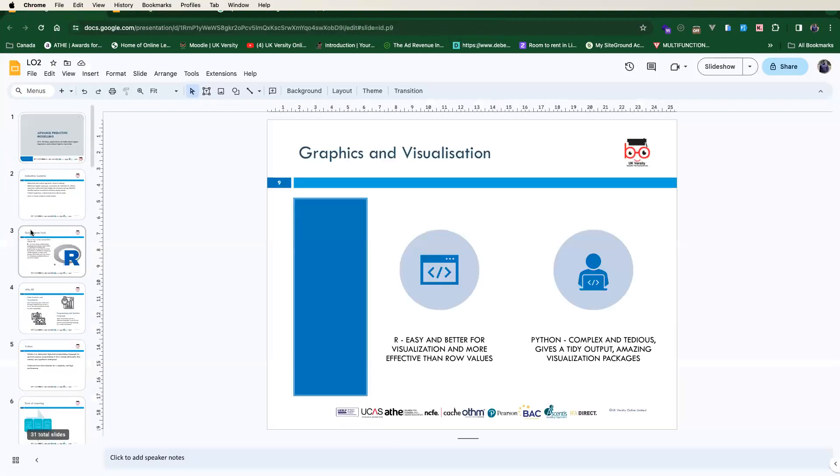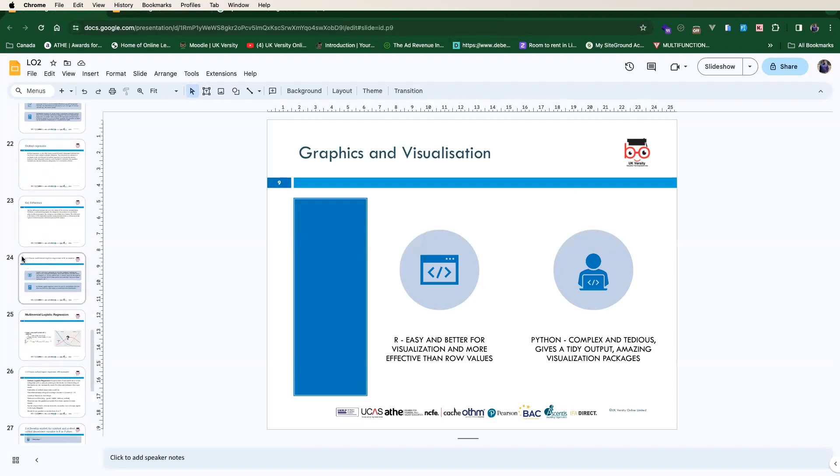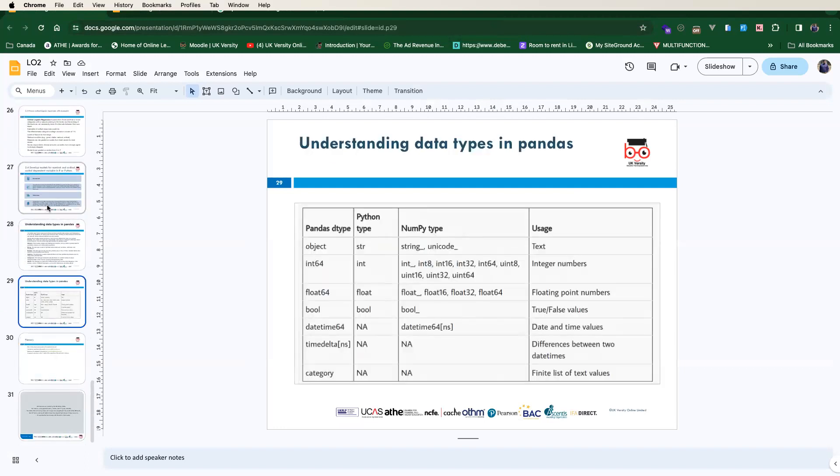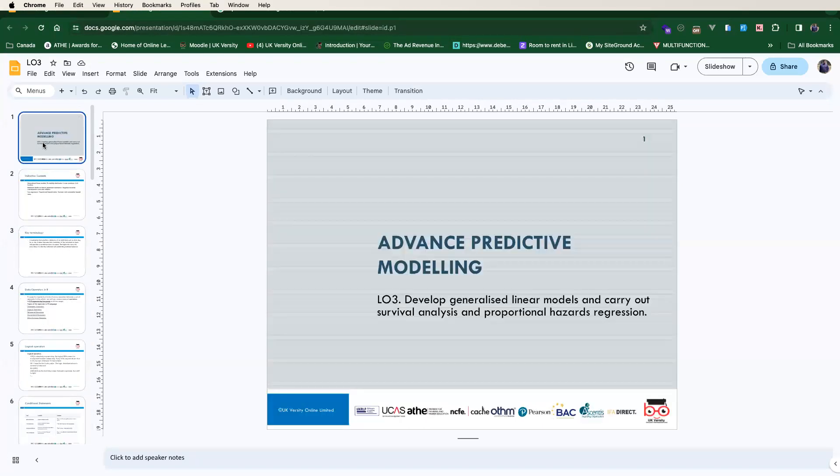So we started off today by talking about what we looked at yesterday, which is data science tools which includes R and Python, the difference between them, the data types in R, and understanding data types in Pandas. Today we looked at developing generalized linear models and carrying out survival analysis and proportional hazard regression, which is PHR.